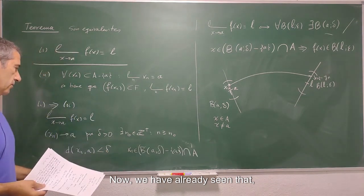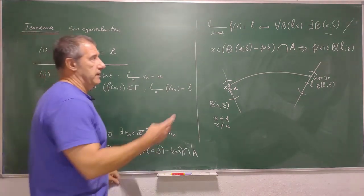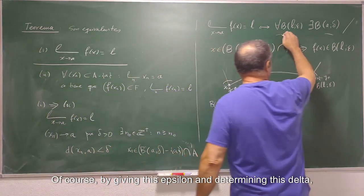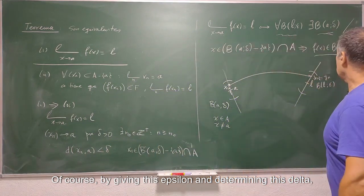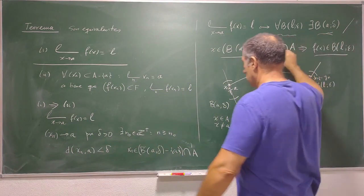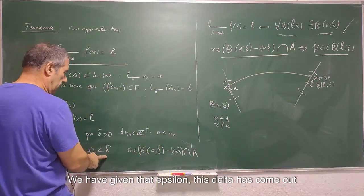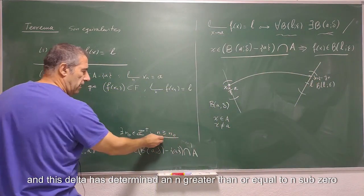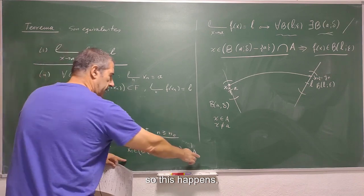And of course since these are elements of the set capital A. Now we have already seen that of course by giving this epsilon and determining this delta, this is going to be fulfilled. We have given that epsilon, this delta has come out, and this delta has determined an n greater than or equal to n sub 0, so this happens.